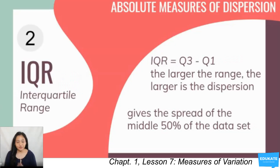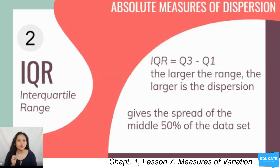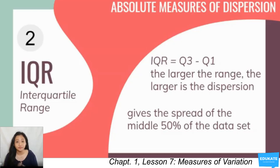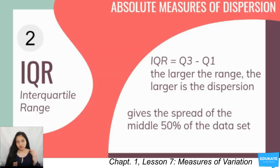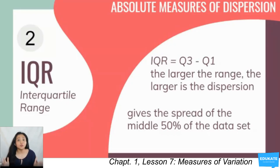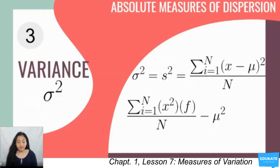The second measure is the IQR, or Interquartile Range. IQR is the value of Quartile 3 minus the value of Quartile 1. The larger the IQR, the larger is the dispersion of your data. The difference between range and IQR is that the IQR gives the spread of the middle 50 percent of the data set.